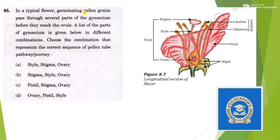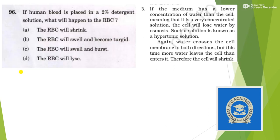Next: in a typical flower, germinating pollen grains pass through several parts of the gynoecium before reaching the ovule. Choose the combination representing the correct sequence of the pollen tube. The pollen grain arrives and passes through — first stigma, then style, then ovary. Stigma → style → ovary — answer is option B.